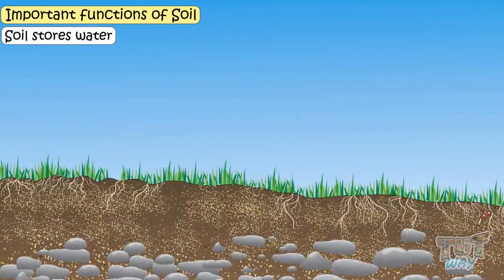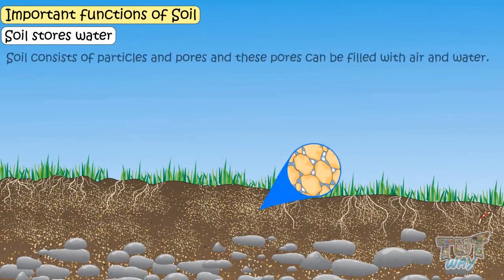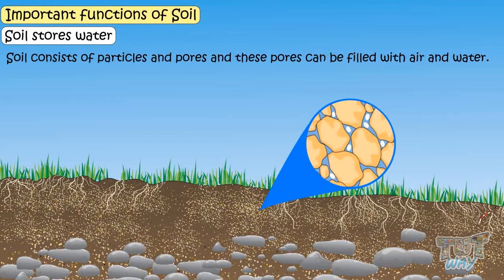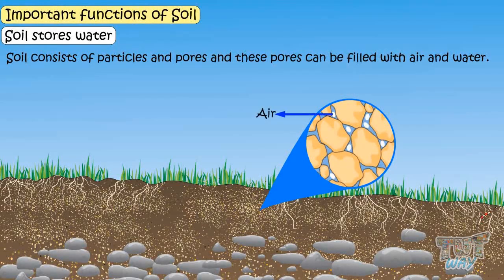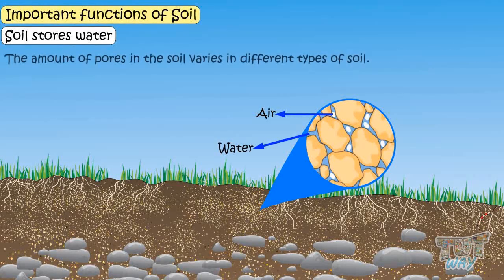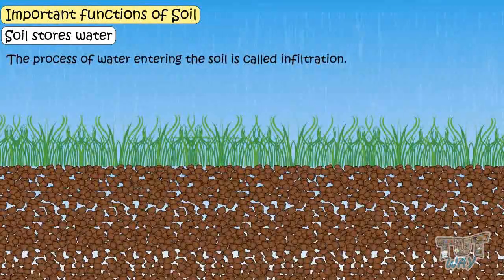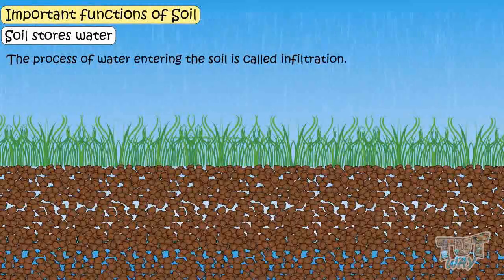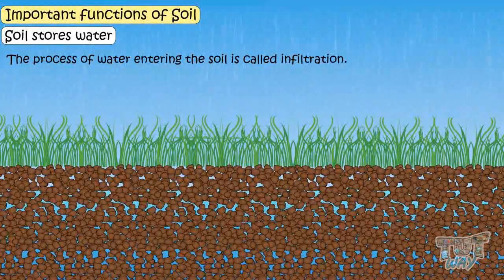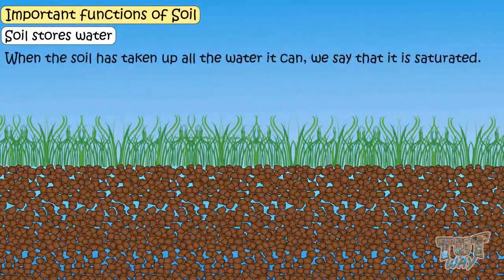Soil stores water. Soils consist of particles and pores, and these pores can be filled with air but also with water. The amount of pores in a soil is different for different types of soil. The process of water entering the soil is called infiltration. When the soil has taken up all the water it can, we say that it is saturated.